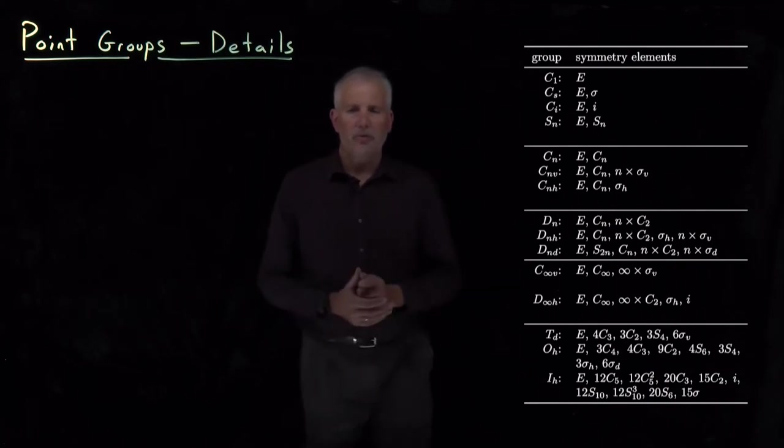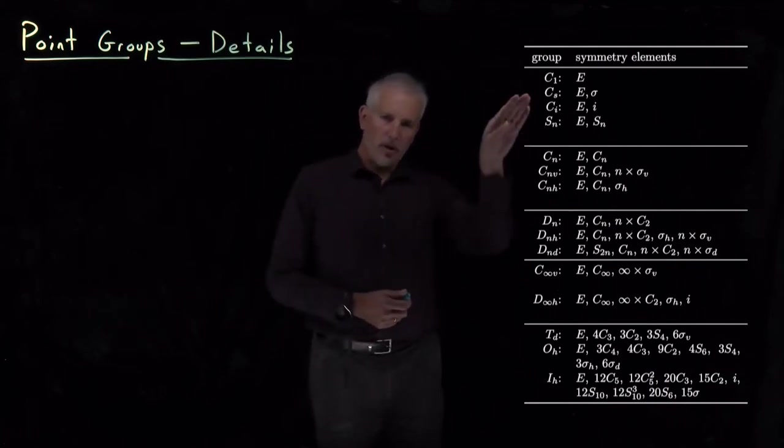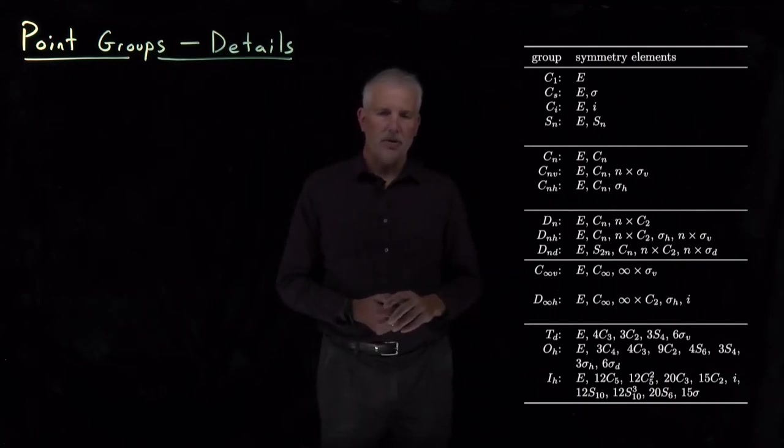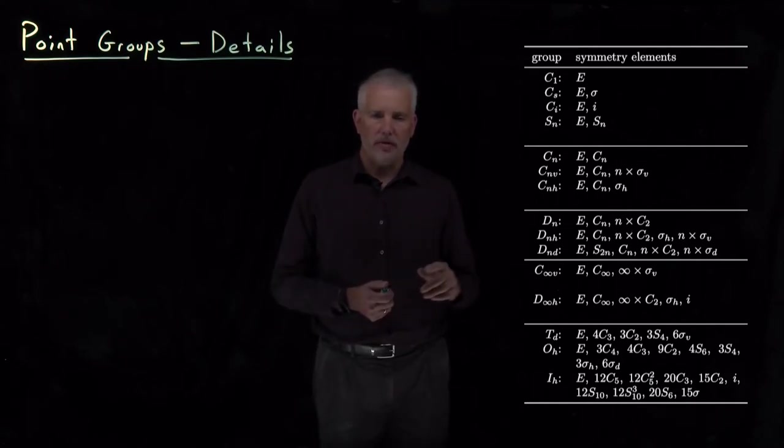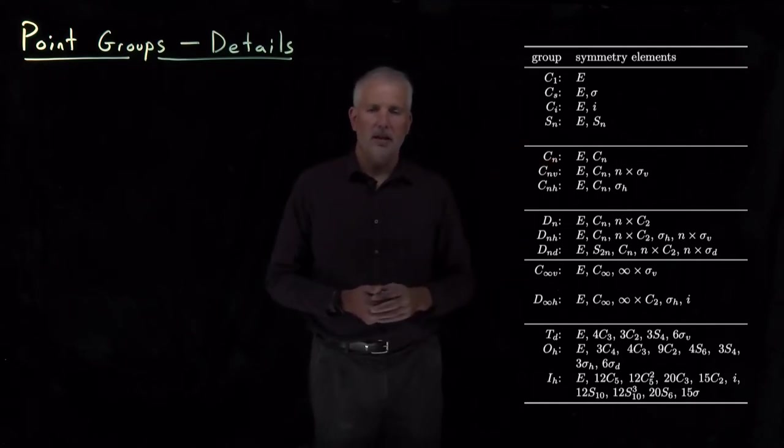We can determine the point group of a molecule if we know its symmetry elements by looking it up on this chart. It turns out the only collections of symmetry elements molecules we ever have will be one of the lines listed on this chart.